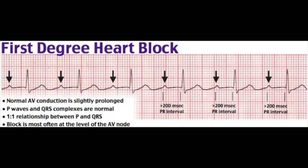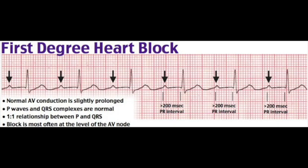Clinical manifestations of first-degree AV block: asymptomatic most of the time. If symptomatic, due to bradycardia-related decreased perfusion — fatigue, dizziness, dyspnea, chest pain, syncope, or hypotension and altered mental status if severe. Diagnosis on EKG: all atrial impulses are delayed but conducted; prolonged PR interval greater than 0.20 seconds; all P waves followed by a QRS complex — no dropped impulses. Management: asymptomatic — no treatment, maybe cardiac consult. Symptomatic — atropine, epinephrine; pacemaker is definitive if severe.